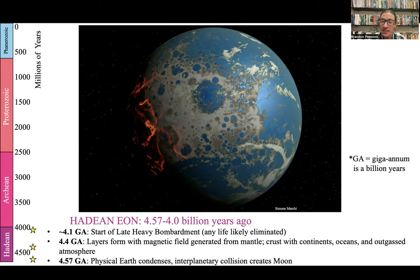Last lecture we got through the Hadean. This is our summary slide for the Hadean, talking about some features of the planet and our best ideas of when they formed, including just how old the Earth itself really is — about 4.57 billion years old, just a hair under how old we think the Sun is, about 4.6 billion years old.